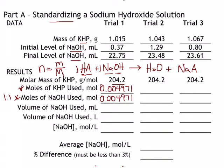What volume of base was used in milliliters? Looking at the data: initial level 0.37 mL, final level 22.75 mL. Subtracting those gives 22.38 milliliters used. To convert to liters, divide by 1,000 — there are 1,000 milliliters in one liter — giving 0.02238 liters. Don't round off to 0.022; keep all the digits.